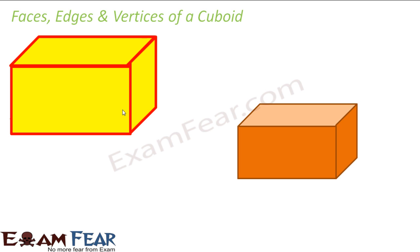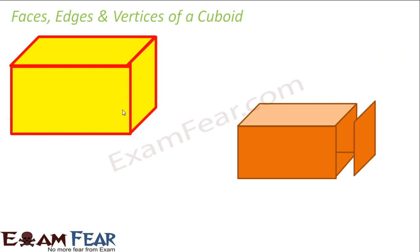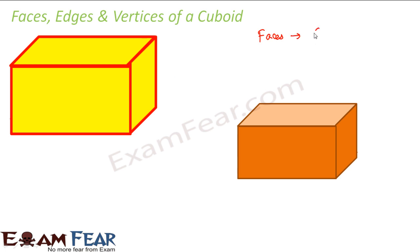Let us take the example of a cuboid. What do we mean by faces, edges and vertices of a cuboid? On the screen you see a cuboid. When we talk about faces, we basically talk about the surfaces that make the cuboid. Looking at this cuboid, the surfaces are 1, 2, 3, 4, 5 and 6. So there are a total of six surfaces — one on the top, one at the bottom, one in front, one at the back, and two on the sides. These six surfaces are called faces. So there are six faces in this cuboid.